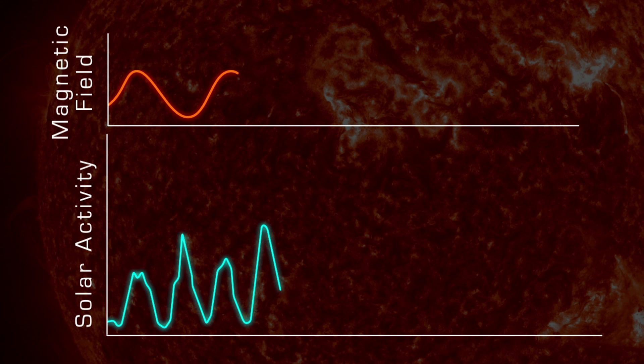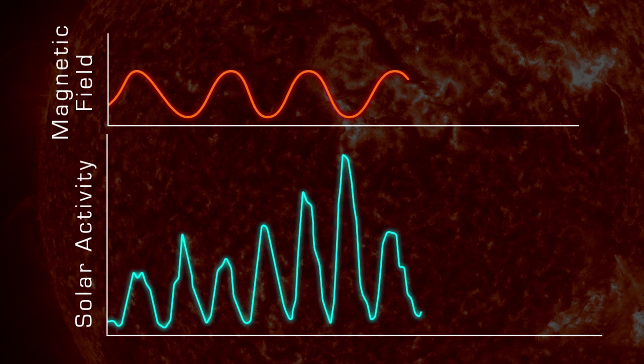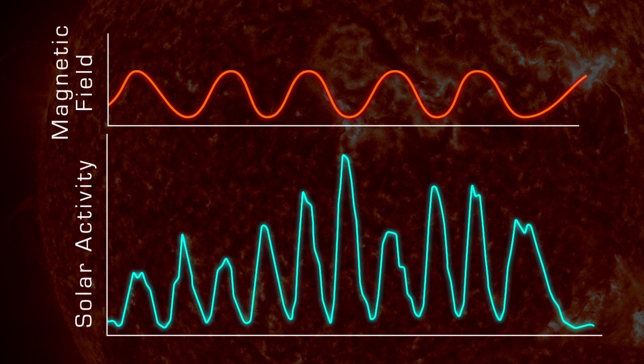The Sun's 11-year cycle is a symptom of a longer 22-year cycle called the solar cycle, or Hale cycle, which affects the Sun's magnetic fields.